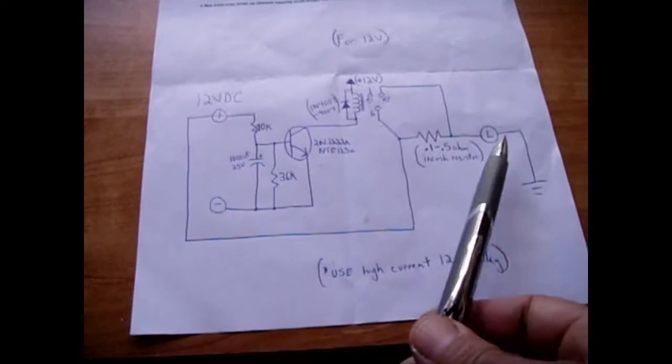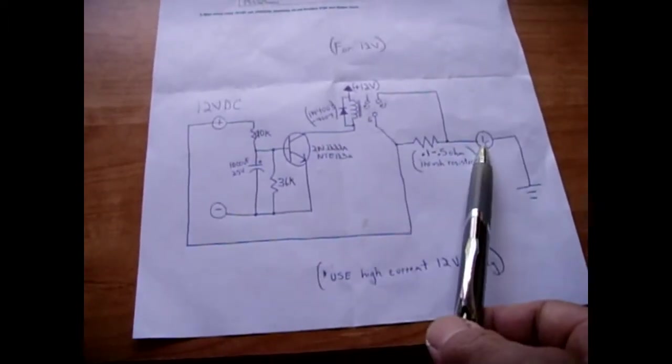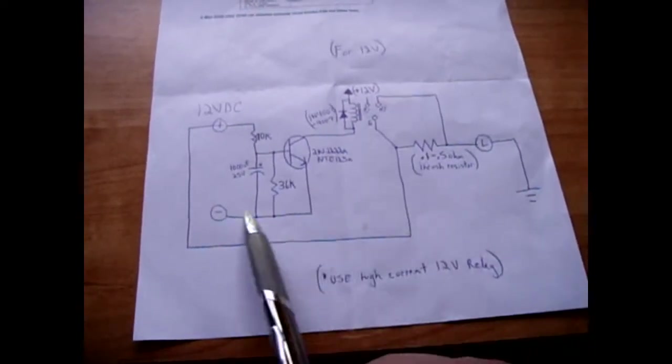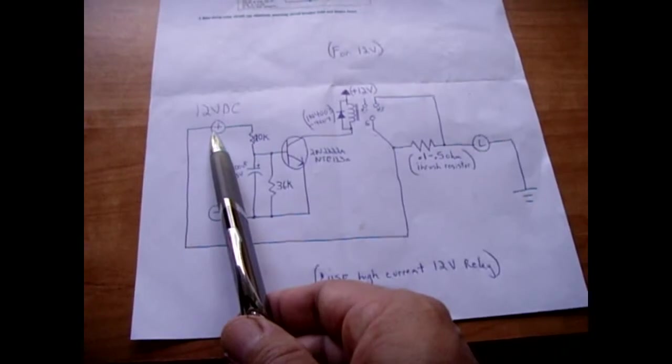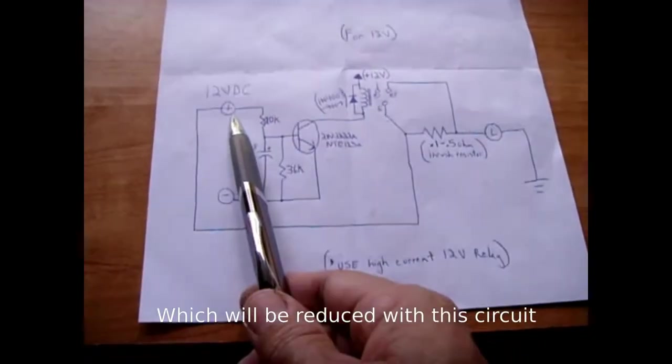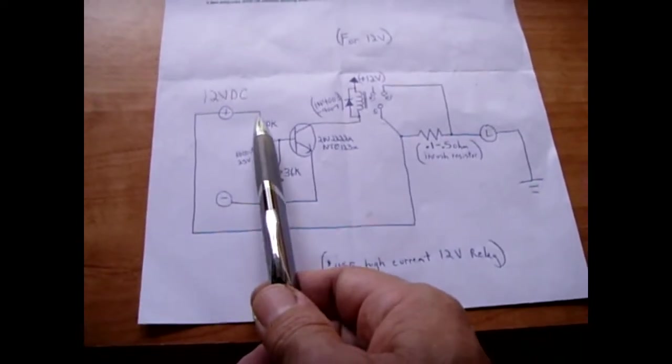You have this circuit up to the relay, then you have the 12 volt DC feeding into your inductive load circuit. Ordinarily when you would connect this to the positive you get a pretty big spark because of the inrush current going into the circuit.